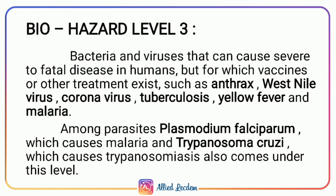Biohazard Level 3 involves bacteria and viruses that can cause severe to fatal disease in humans but for which vaccines or other treatment methods are available. This includes anthrax, West Nile virus, coronavirus, tuberculosis, yellow fever, and malaria. Some parasites also come under this level, including Plasmodium falciparum causing malaria and Trypanosoma cruzi causing Trypanosomiasis.